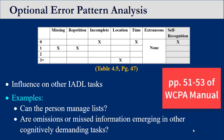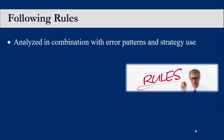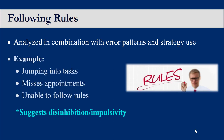Pages 51 to 53 in the WCPA manual outline what specific error patterns may indicate. Rule breaks can occur for many different reasons and are analyzed in combination with error patterns and strategy use. As an example, a client that jumps into a task, misses many appointments, and is unable to follow rules can reflect a lack of preplanning, difficulty restraining actions, and impulsivity.